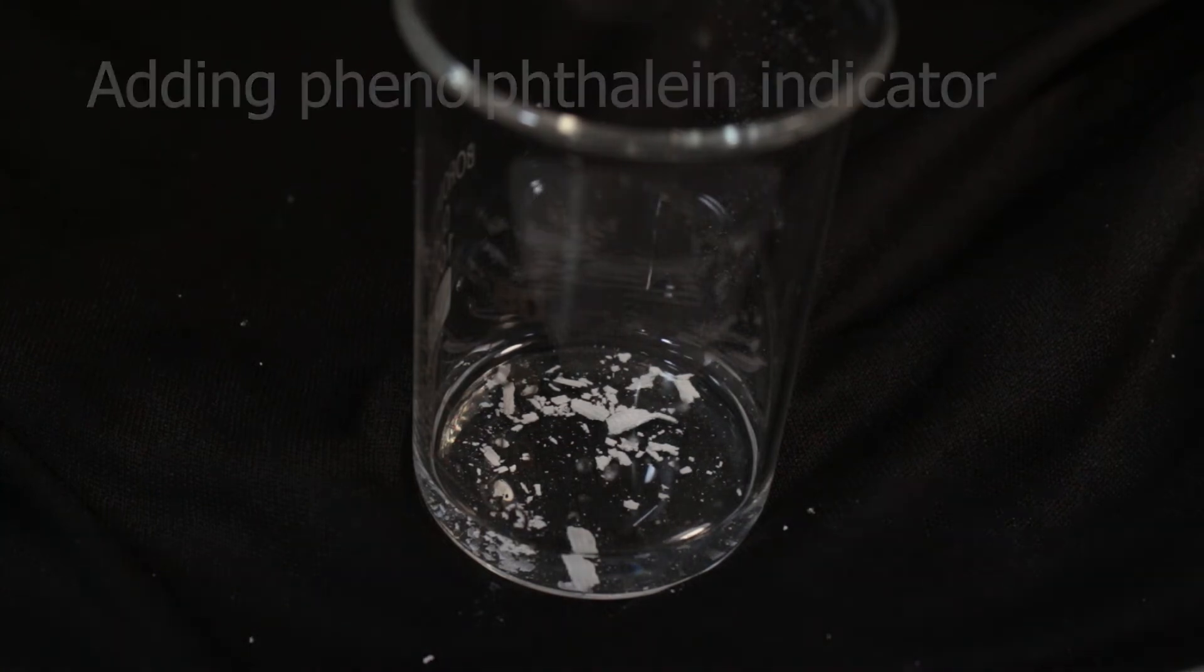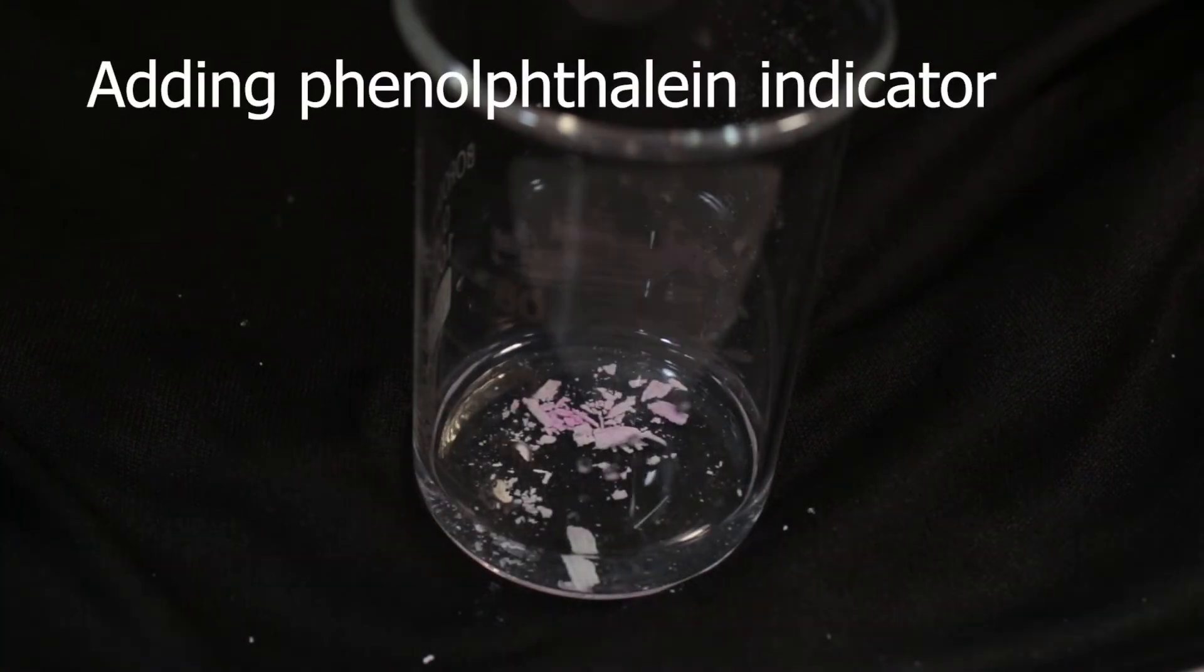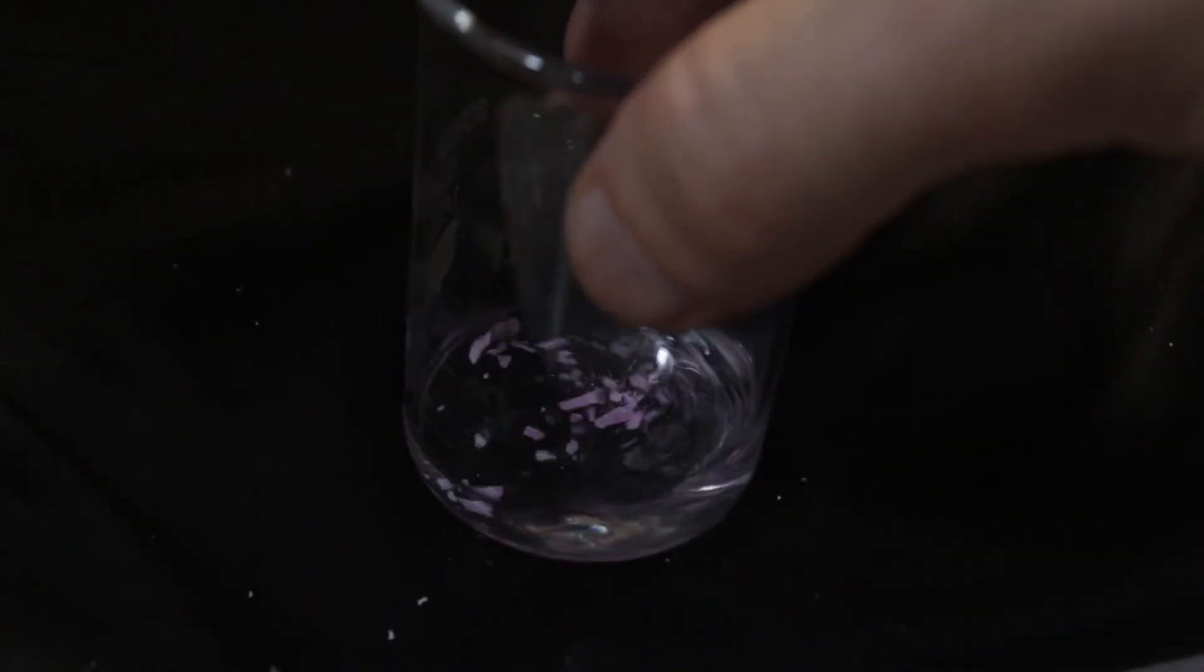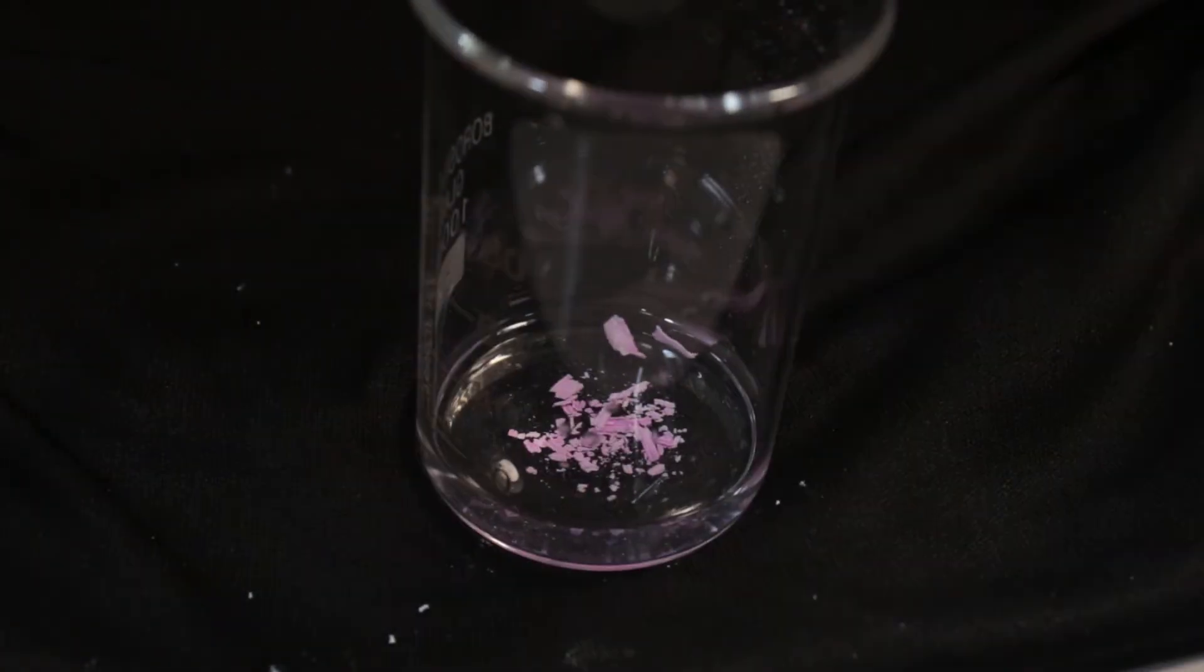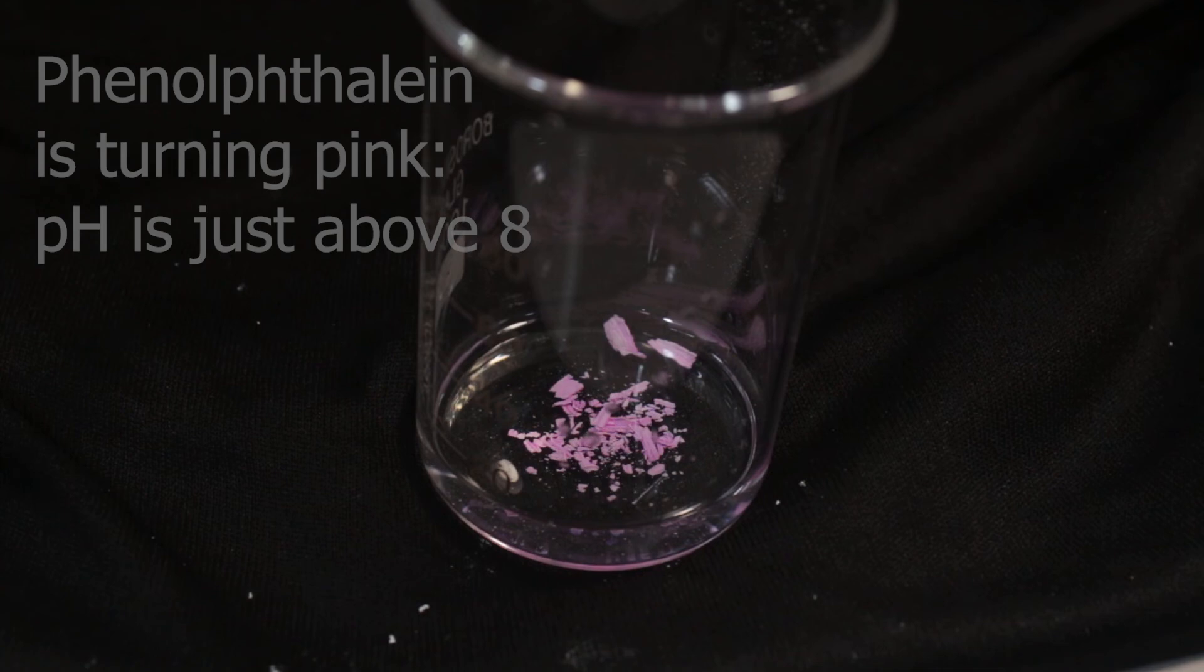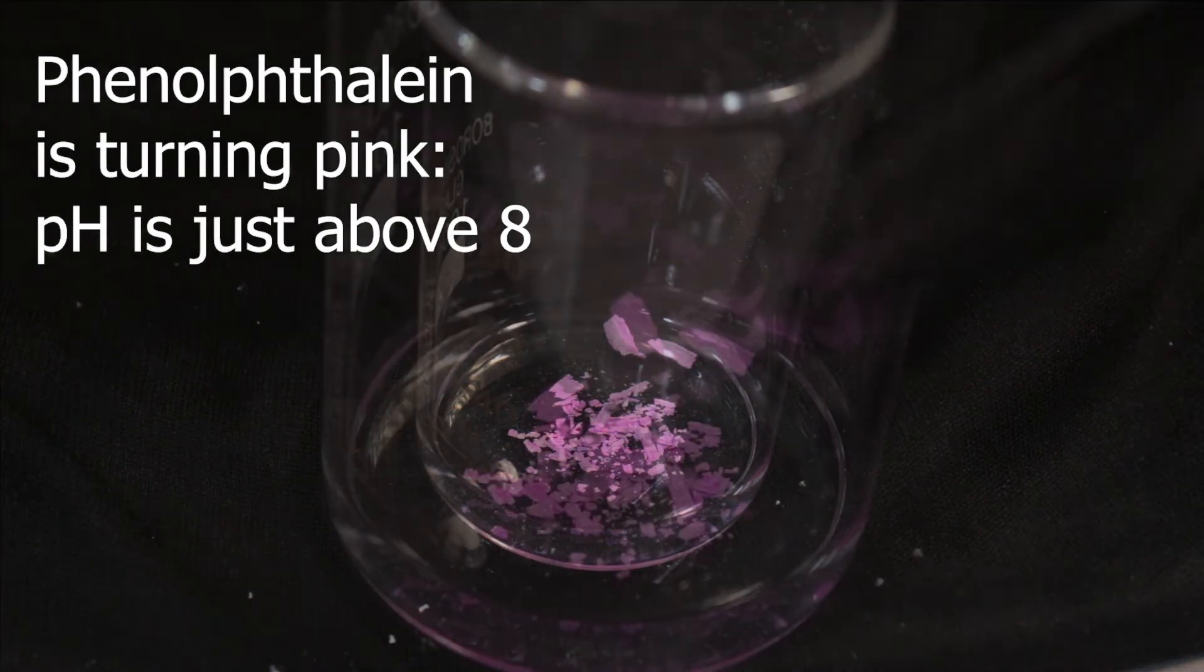Magnesium hydroxide is not very soluble in water, but if we add phenolphthalein, we can see color change on the surface of the white pieces. It means pH is just above 8.